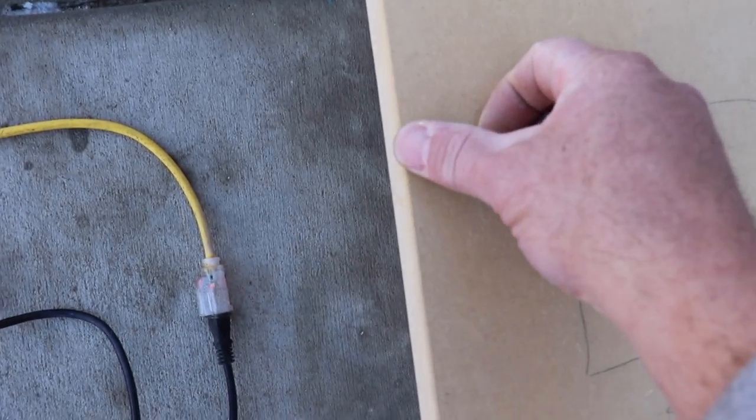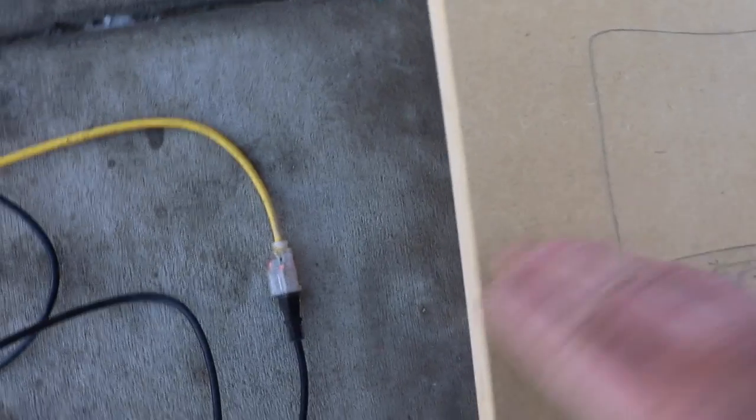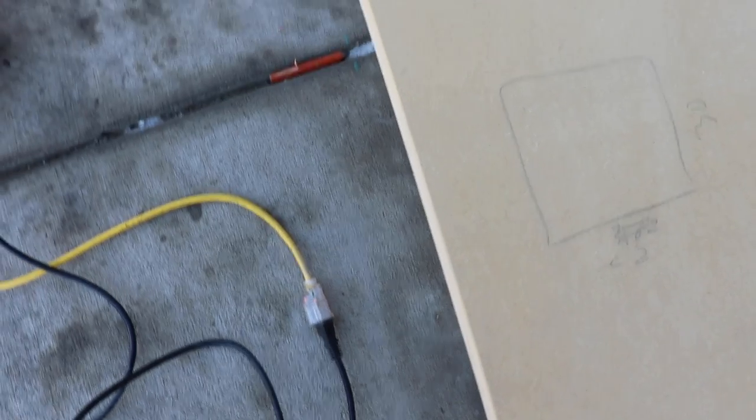Now you can see the little rounded edge right here. And if you want to make it nice and smooth, I mean it should be smooth, but if you want to get it a little bit smoother, then just take some sandpaper, give it a light rub, and it'll look perfect.